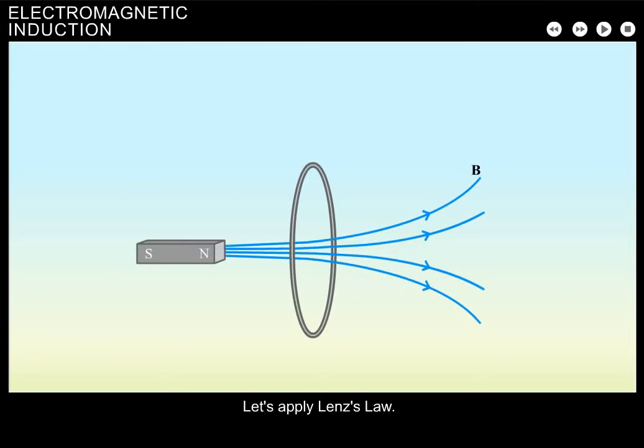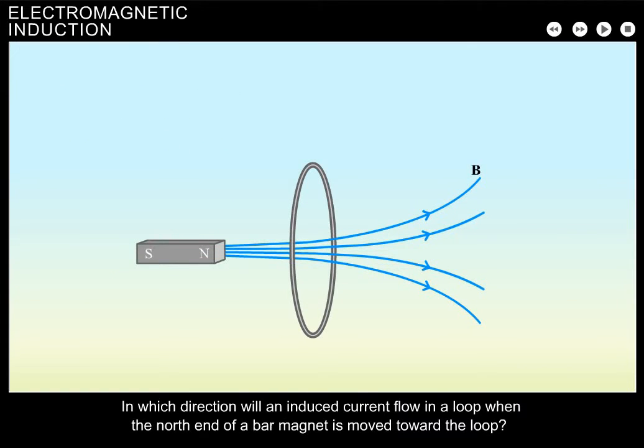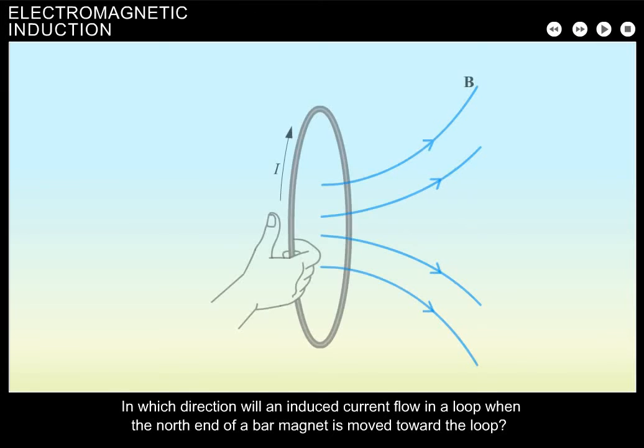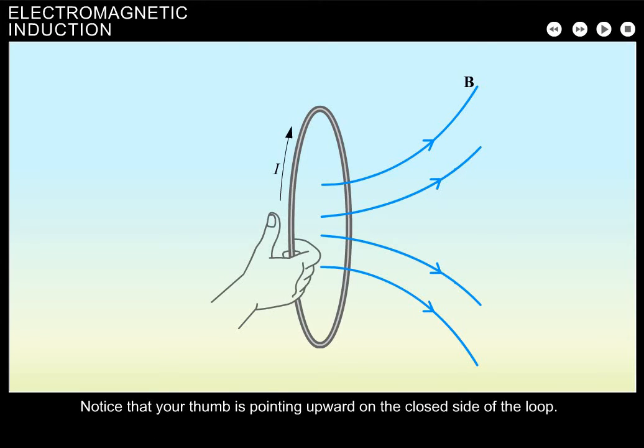Let's apply Lenz's Law. In which direction will an induced current flow in a loop when the north end of a bar magnet is moved toward the loop? Grasp the near side of the loop with your right hand in such a way that your fingers oppose the increasing magnetic flux. Notice that your thumb is pointing upward on the closed side of the loop. This is the direction of the induced current.